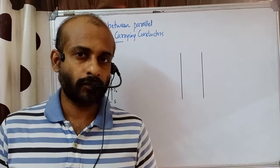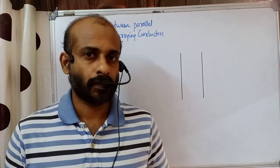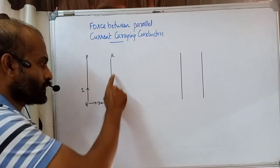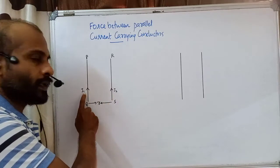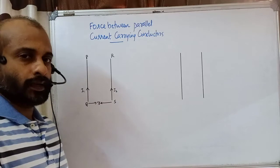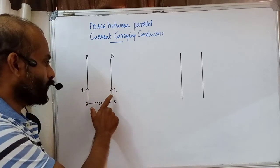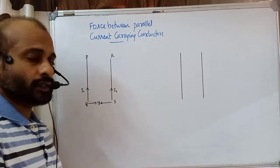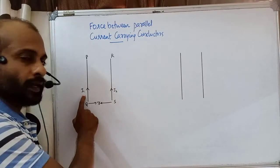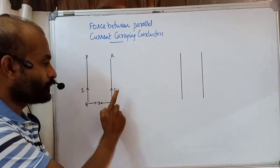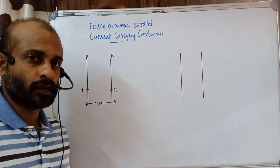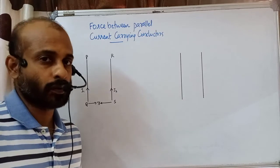Today we are going to see the force between two parallel current-carrying conductors. In the diagram, we have two straight conductors of infinite length — PQ and RS. PQ carries current i1 and RS carries current i2, both in the same direction. Since these are current-carrying conductors, each will produce a magnetic field surrounding it, and because of this magnetic field, both conductors will experience a force — either attraction or repulsion.